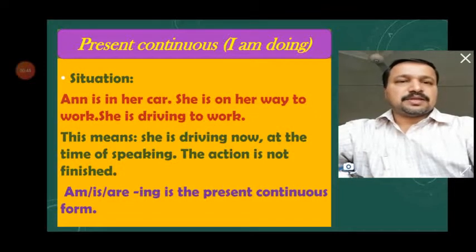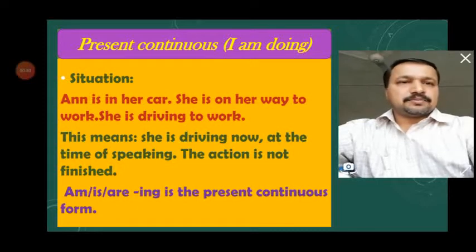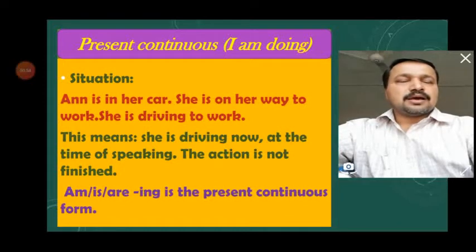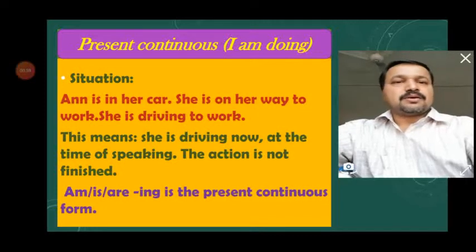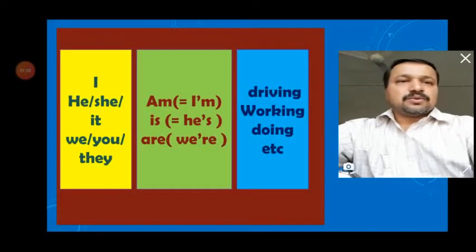We need to discuss the use of auxiliaries. 'Is,' 'am,' and 'are' are the auxiliary helping verbs used in this tense. They are added with the '-ing' form of the verb, that means the present participle form.